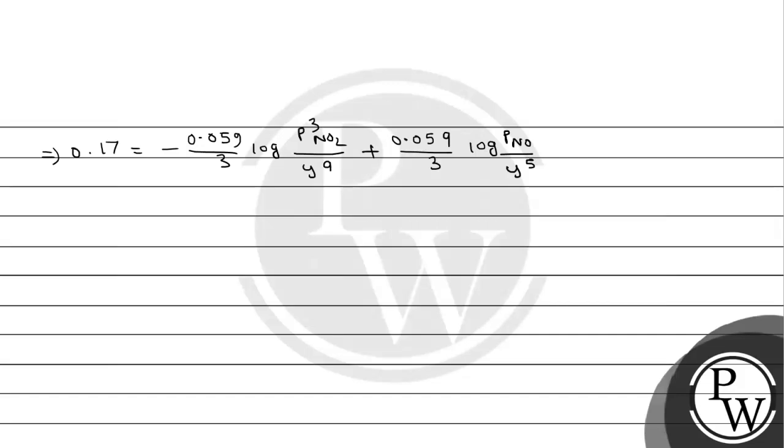This becomes 0.059 divided by 3 log of P NO divided by Y to the power 5 plus 0.059 divided by 3 log of P of NO2 cube divided by Y to the power 9. Taking 0.059 by 3 common, we get log of P NO divided by Y to the power 5 minus log of P NO2 cube divided by Y to the power 9.